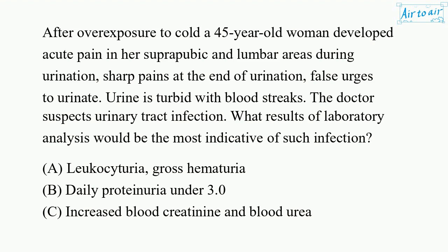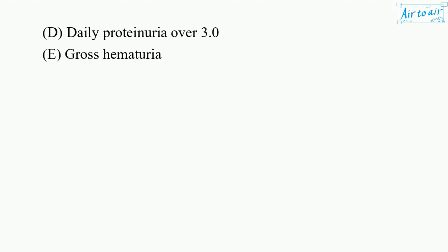B. Daily proteinuria under 3.0. C. Increased blood creatinine and blood urea. D. Daily proteinuria over 3.0. E. Gross hematuria.